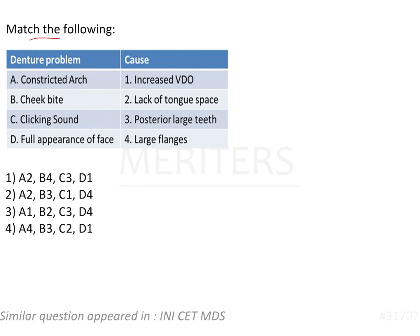Match the following: denture problems and their causes. The options are constricted arch, cheek biting, clicking sound, and full appearance of face. Looking at this, clicking sound is the commonest and easiest to identify because it is associated with increased vertical dimension at occlusion. So let's start with clicking sound.